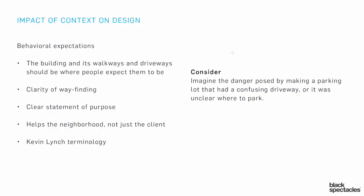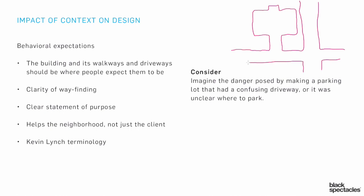Let's consider an example. Imagine the danger posed by making a parking lot that had a confusing driveway, or where it was unclear where to park. You can imagine a parking lot that has a driveway very close to another intersection. Somebody driving along thinks they've gotten to the corner, but they turn in because this distance is too close — it's just not what people expect.